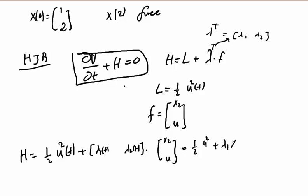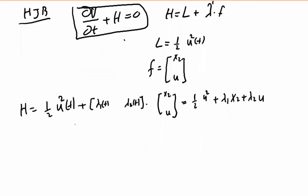This will be equal to half u² plus λ1·x2 plus λ2·u. Now in the Hamiltonian equation, in order to find the optimal control u*(t) and get x*(t), the optimal state, we need to find this.